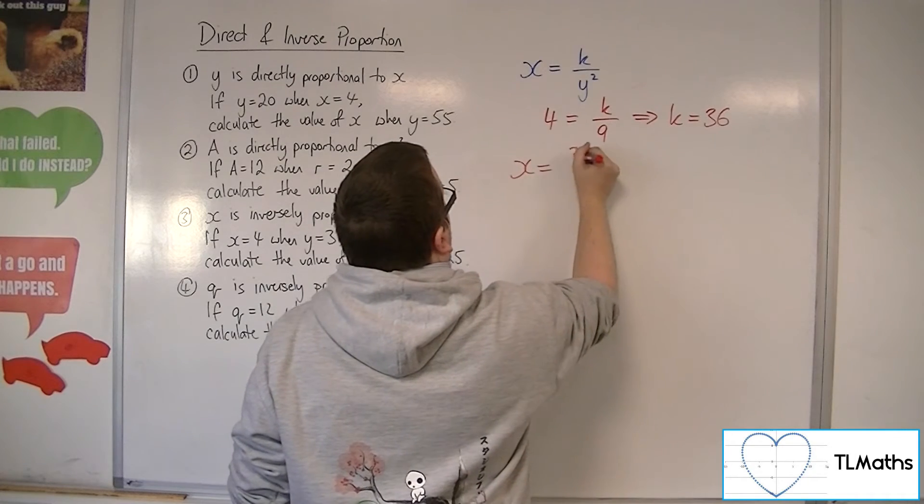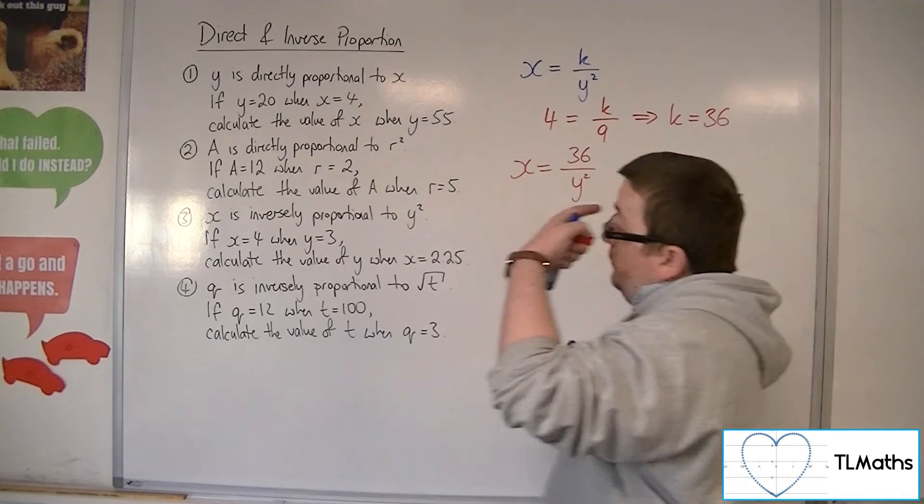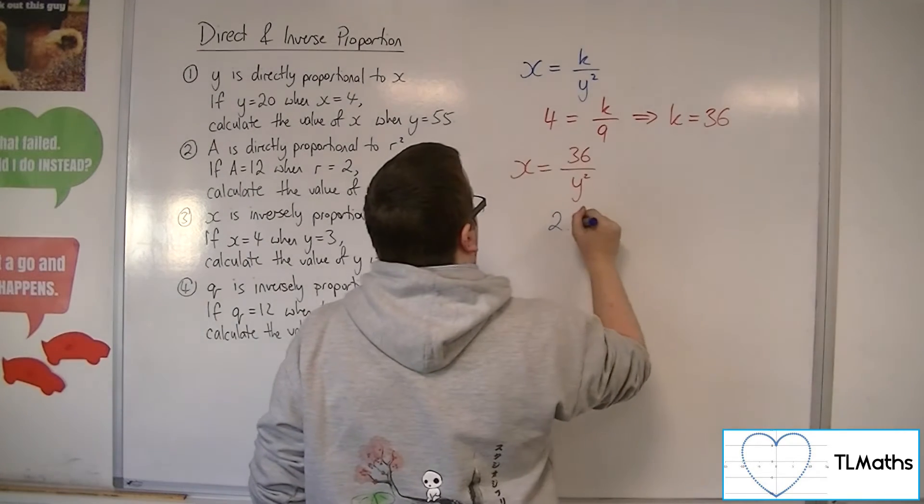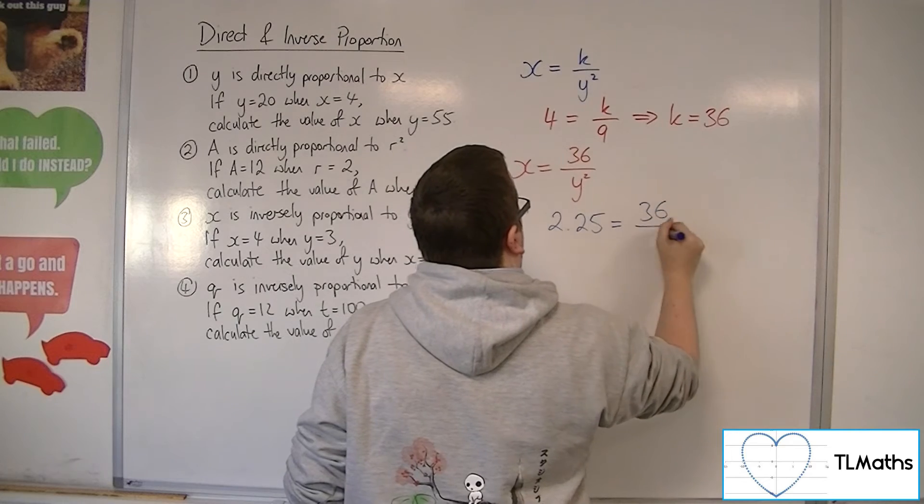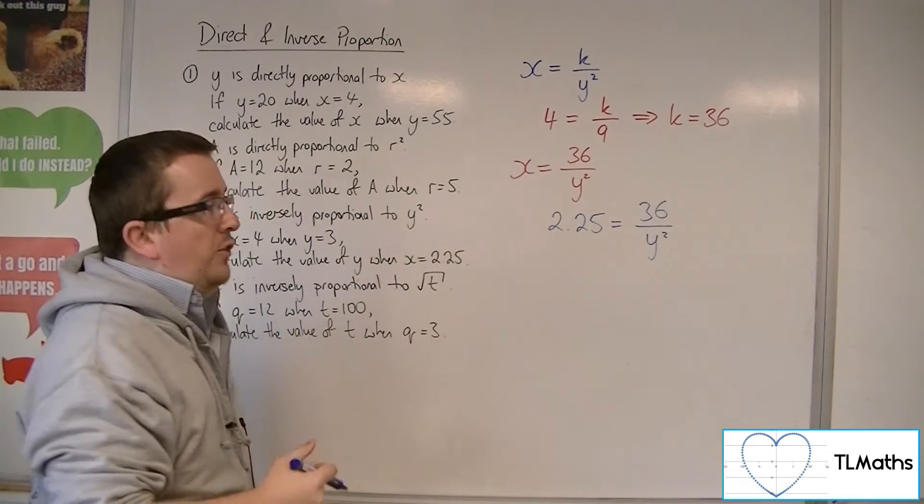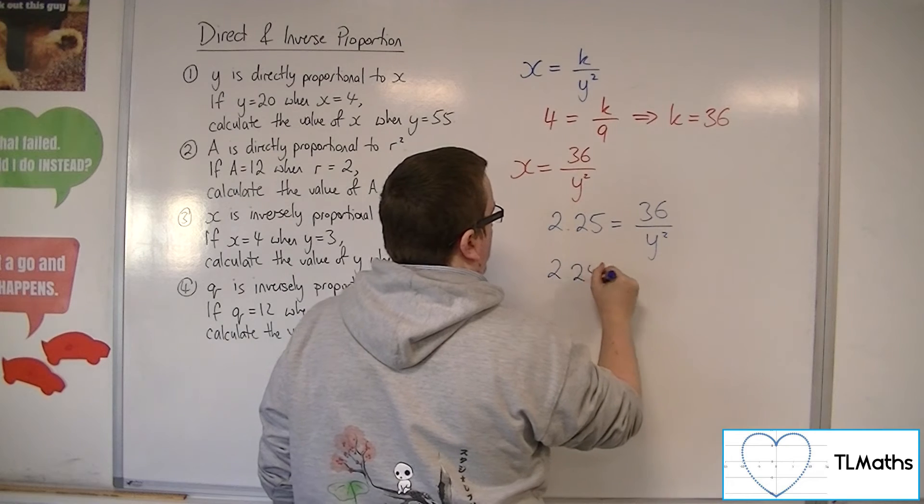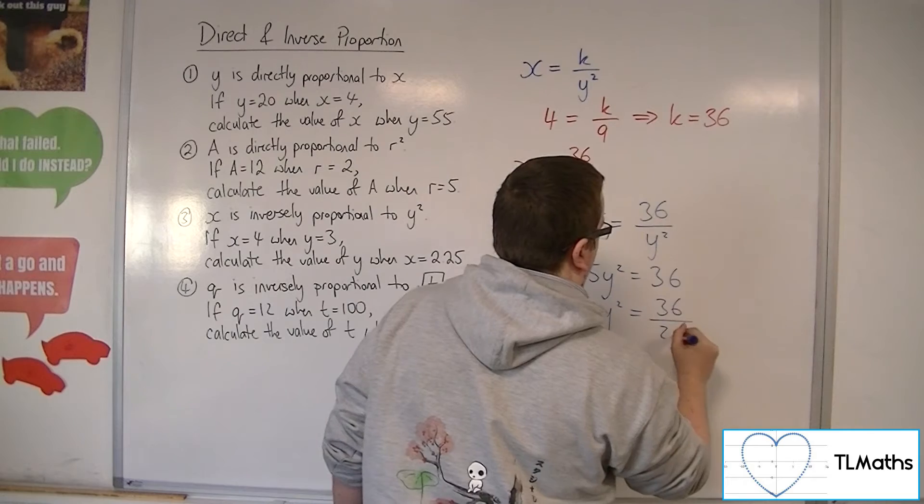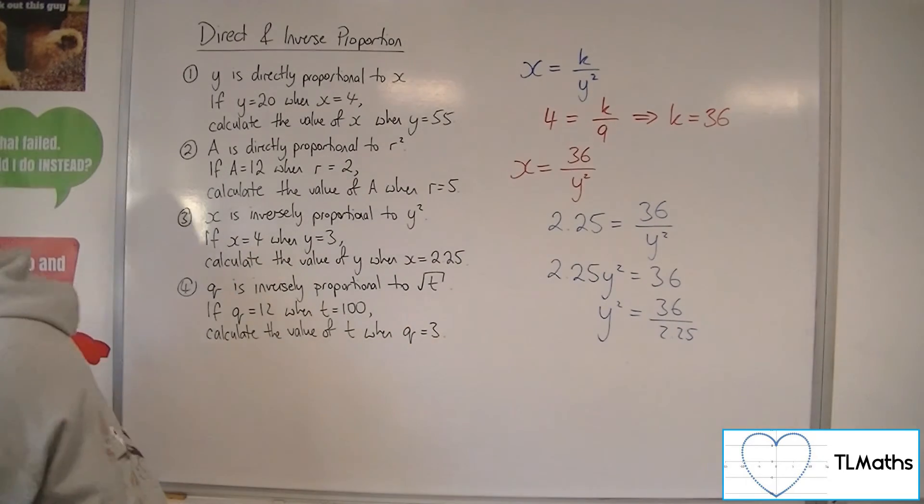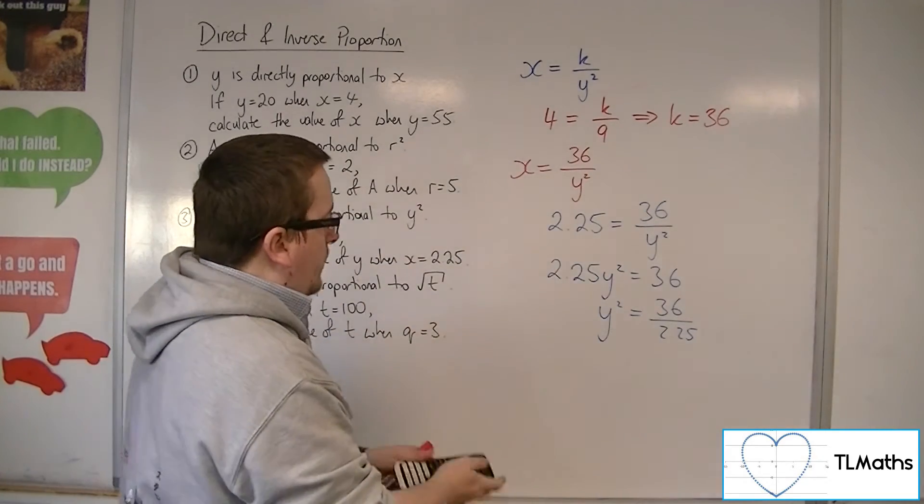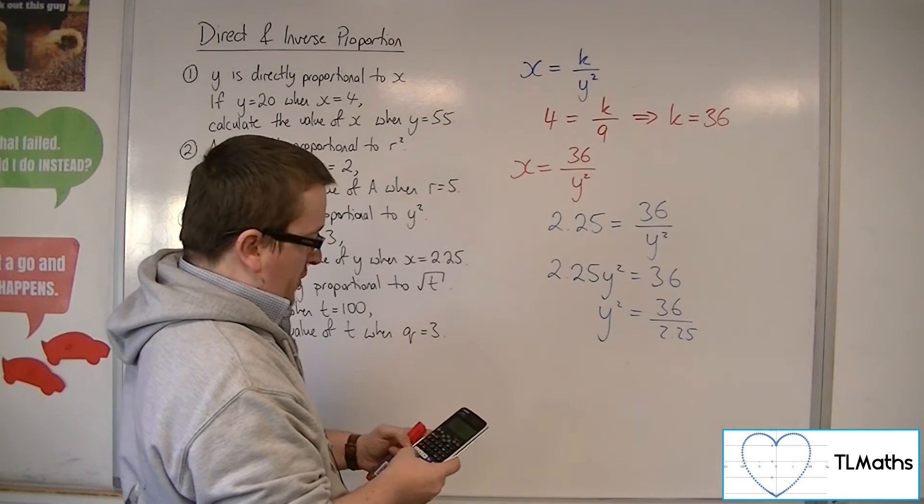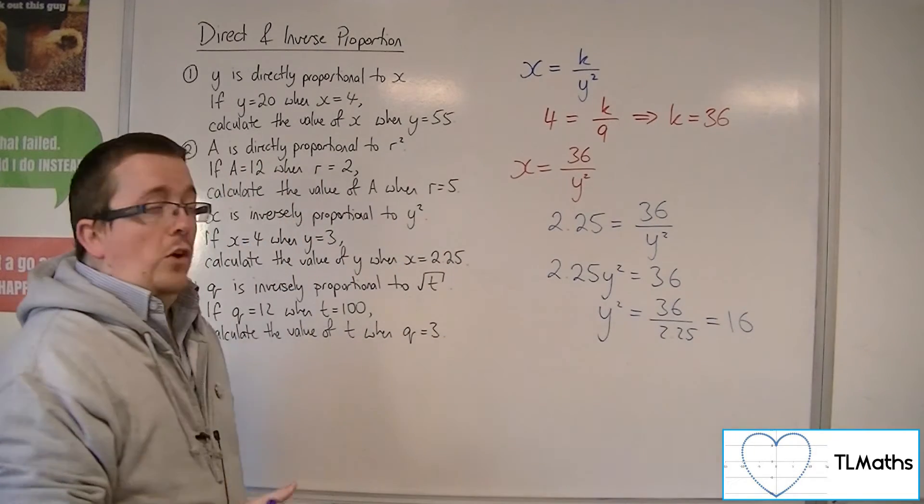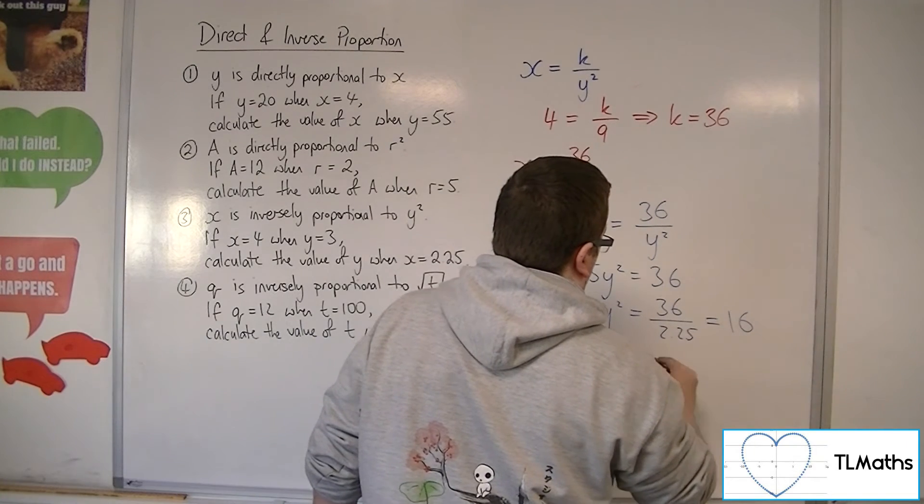So x is equal to 36 over y squared. Calculate the value of y when x is equal to 2.25. So 2.25 must be equal to 36 over y squared. So if I multiply both sides by the y squared, and then divide both sides by the 2.25. Now, 36 over 2.25 is 16. So y would be plus or minus 4.